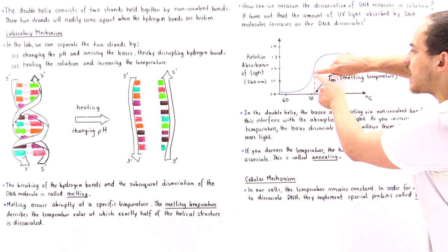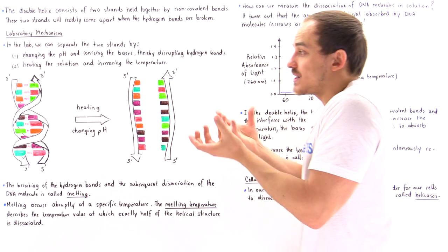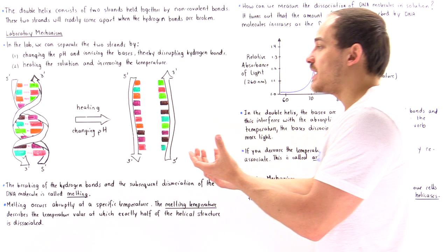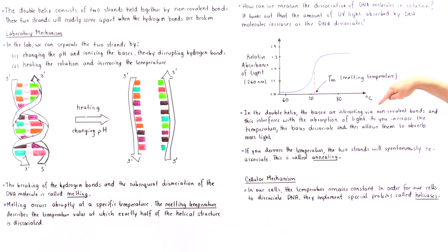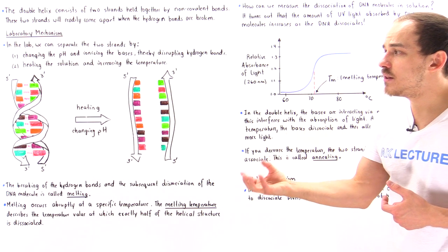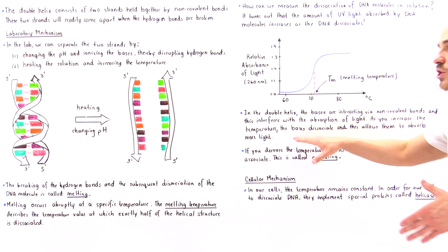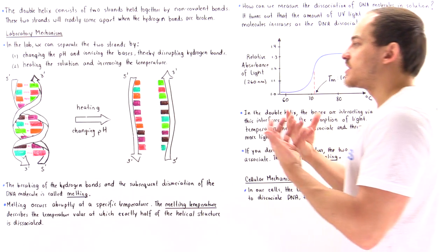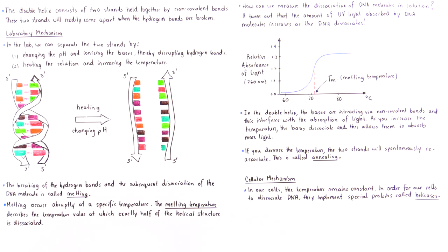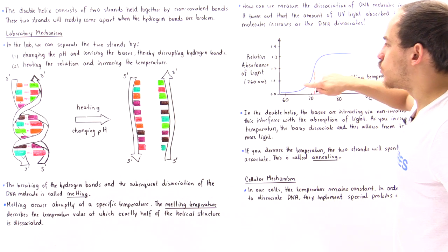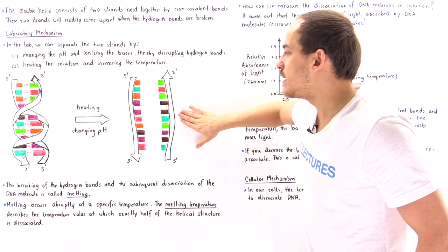This temperature value describes a specific point on the curve — the point where exactly half of those DNA molecules have dissociated their double helix structure. In the double helix, the bases interact via non-covalent bonds, which interferes with their ability to absorb light. As we increase the temperature and cause the bases to break those bonds, they become free and can absorb more light, as shown in the diagram. One area of the curve describes the intact double helix, and another area describes where the DNA has melted and dissociated.